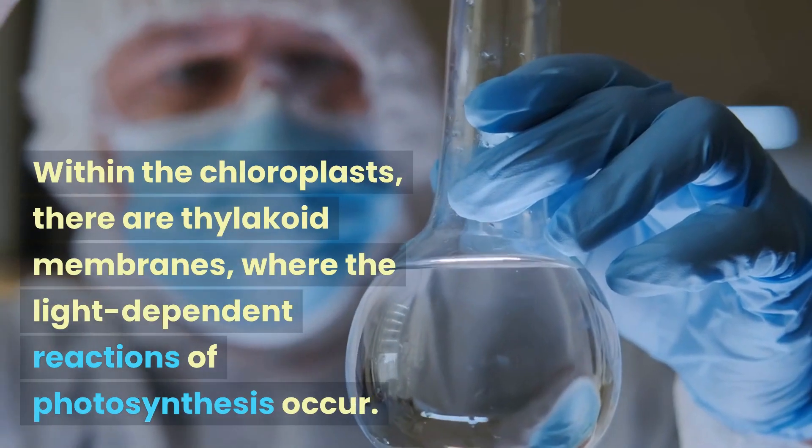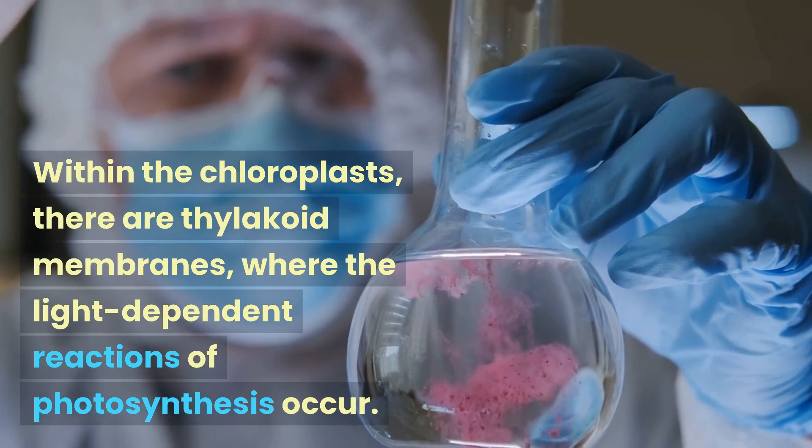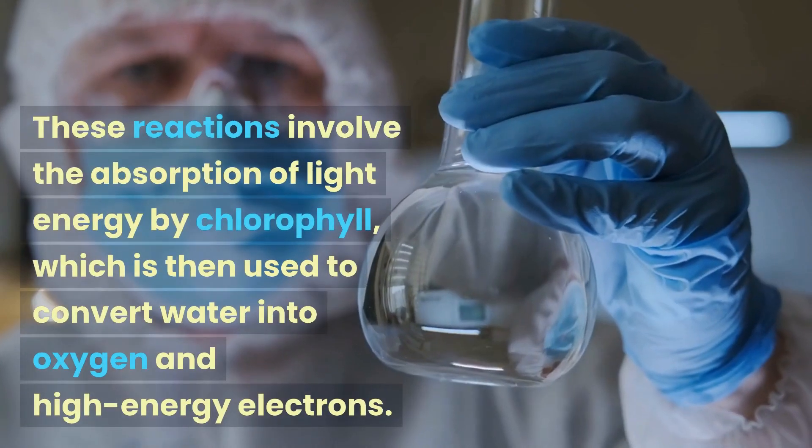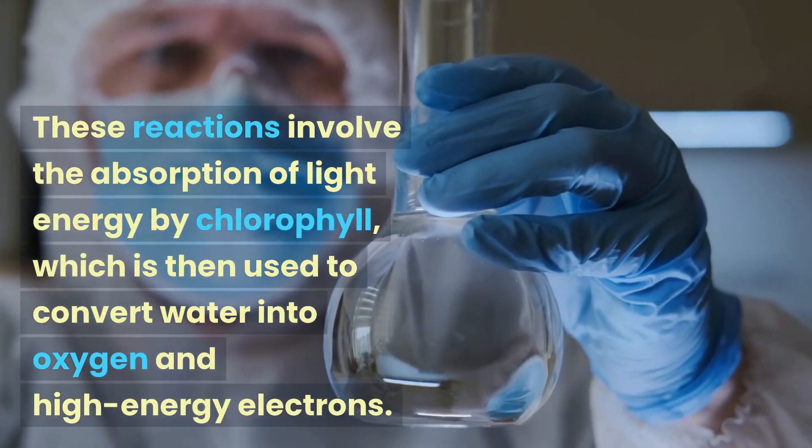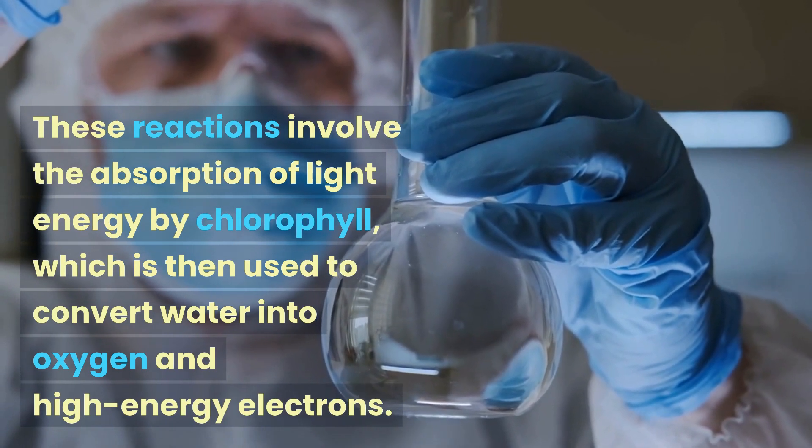Within the chloroplasts, there are thylakoid membranes where the light-dependent reactions of photosynthesis occur. These reactions involve the absorption of light energy by chlorophyll, which is then used to convert water into oxygen and high-energy electrons.